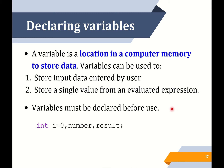All variables must be declared before use. For example, we have variable name 'i' and its value is 0, we have 'number' and we have 'result'. To declare a variable we must have a data type followed by all the variables we use.